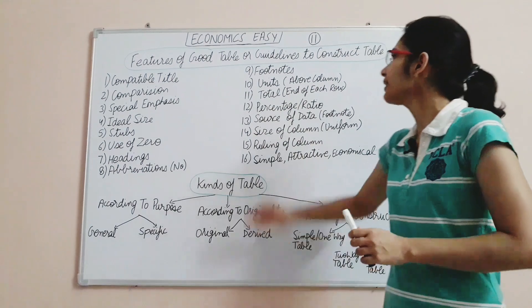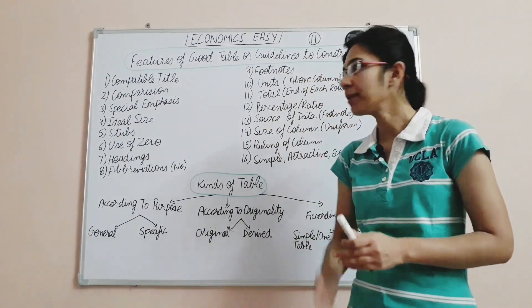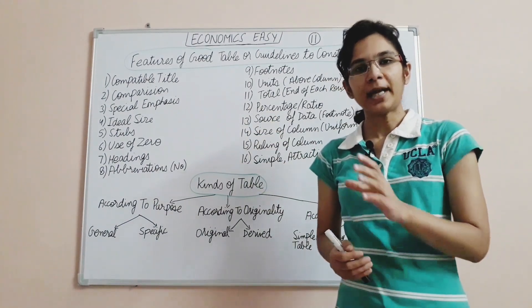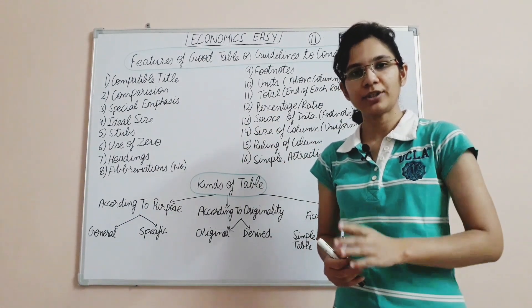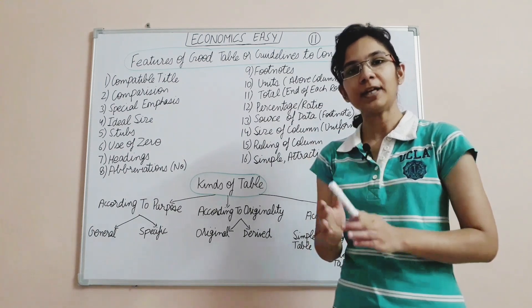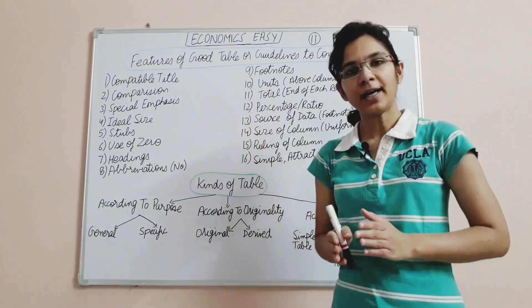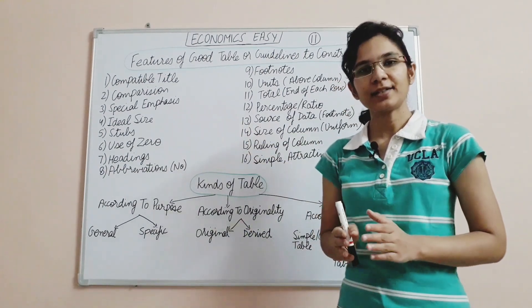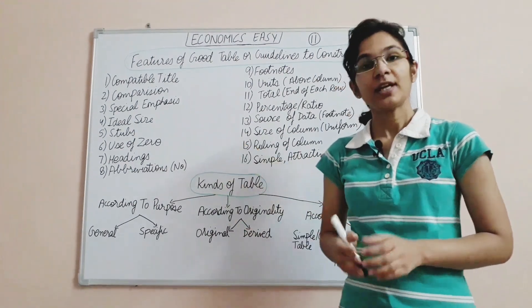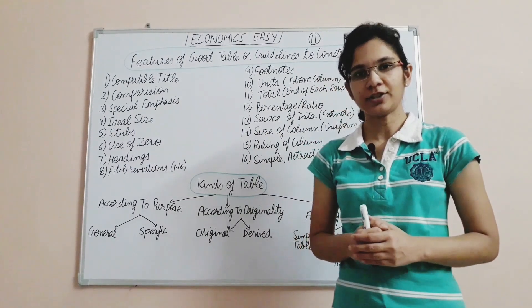Now see the features of a good table — guidelines to construct a good table. First is a compatible title: the title should suit the table and be placed in the middle. Second is comparison: rows and columns should be arranged so they can be easily compared. Third is special emphasis: some items should receive special emphasis, shown through head rows.